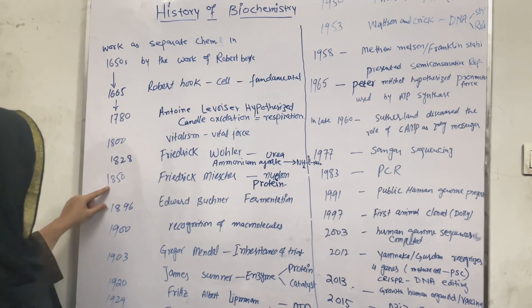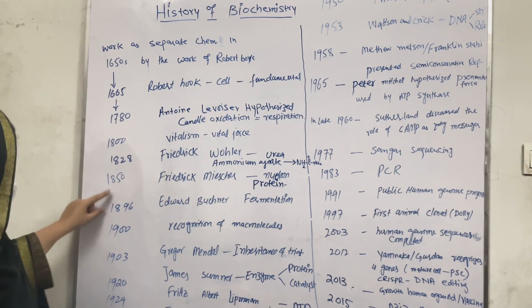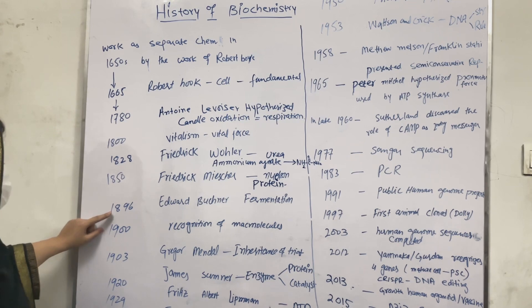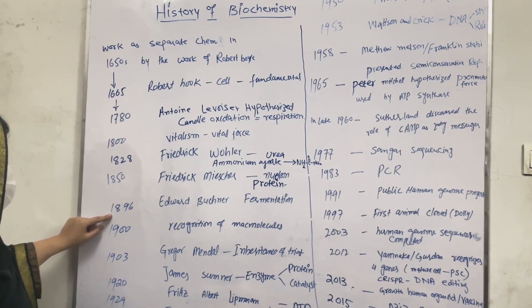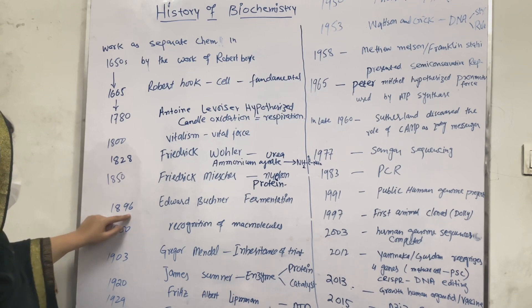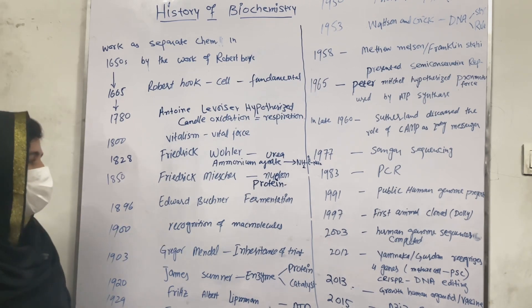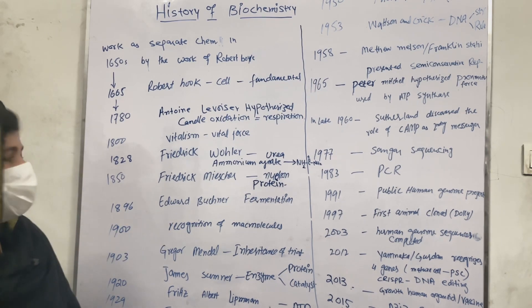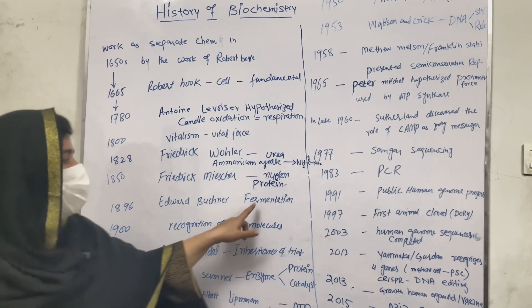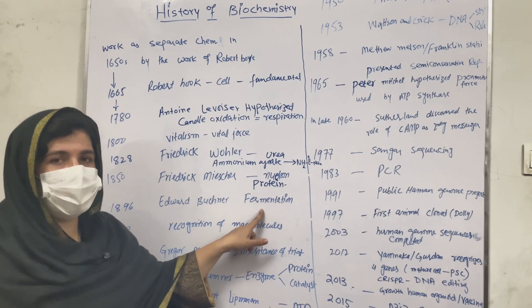After 1850, in 1896, Eduard Buchner performed a chemical reaction — alcoholic fermentation — in a cell-free yeast extract, demonstrating that fermentation could occur without living cells.